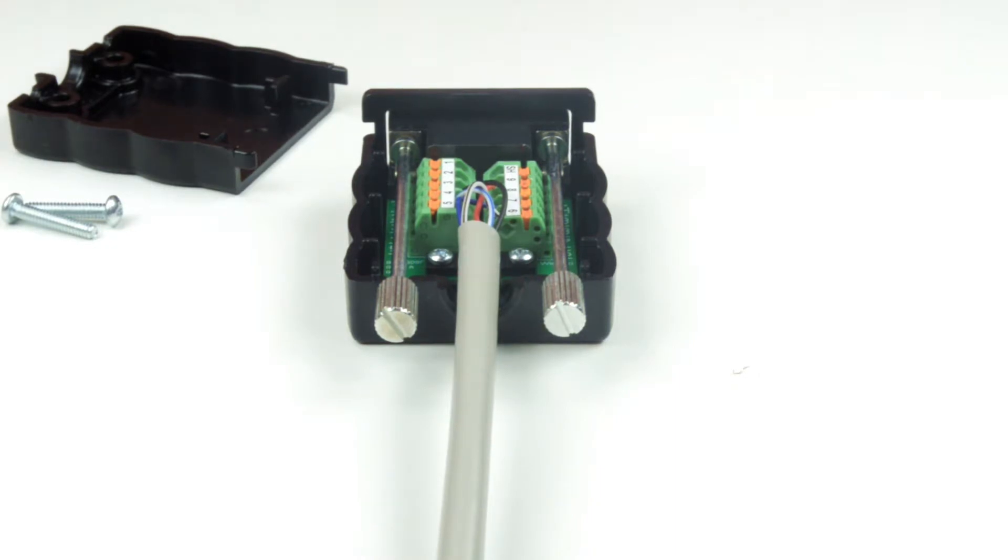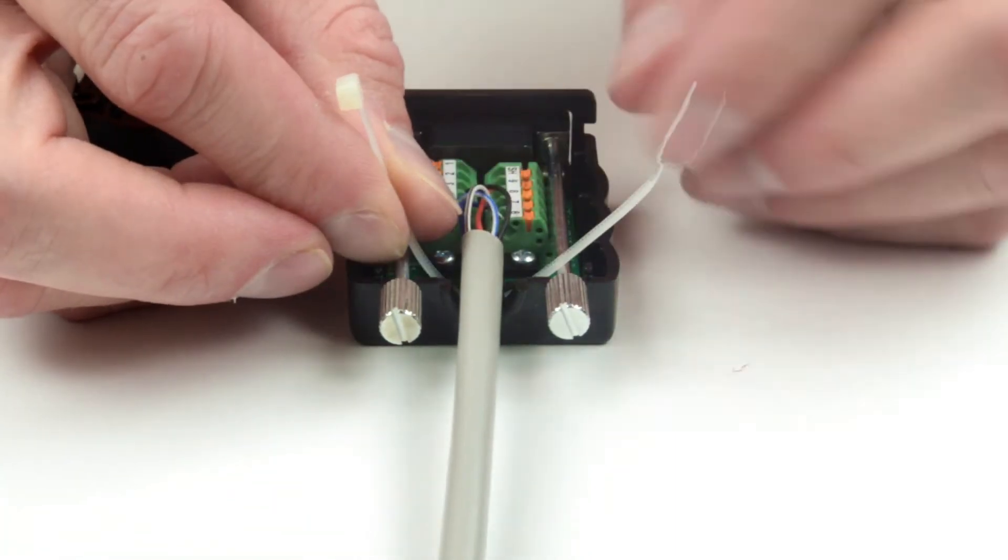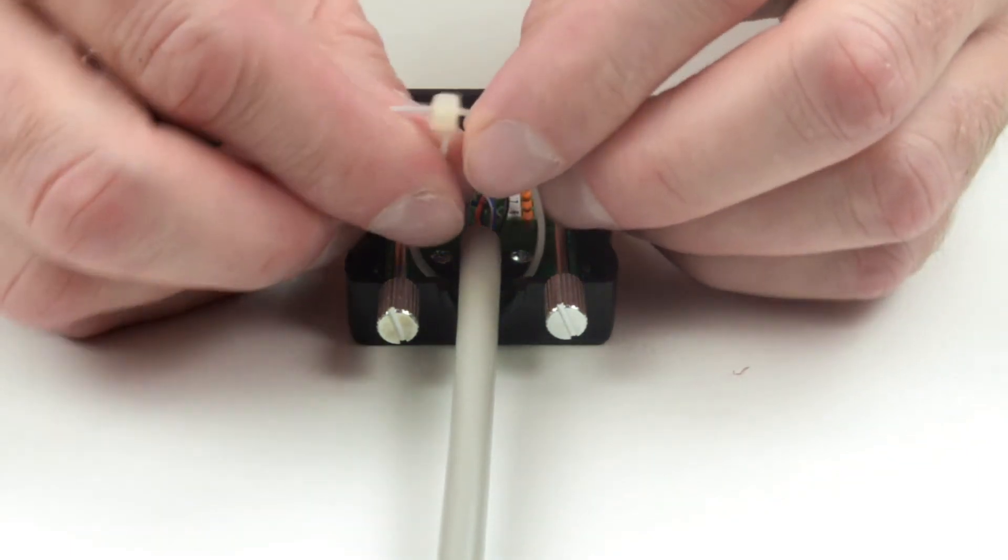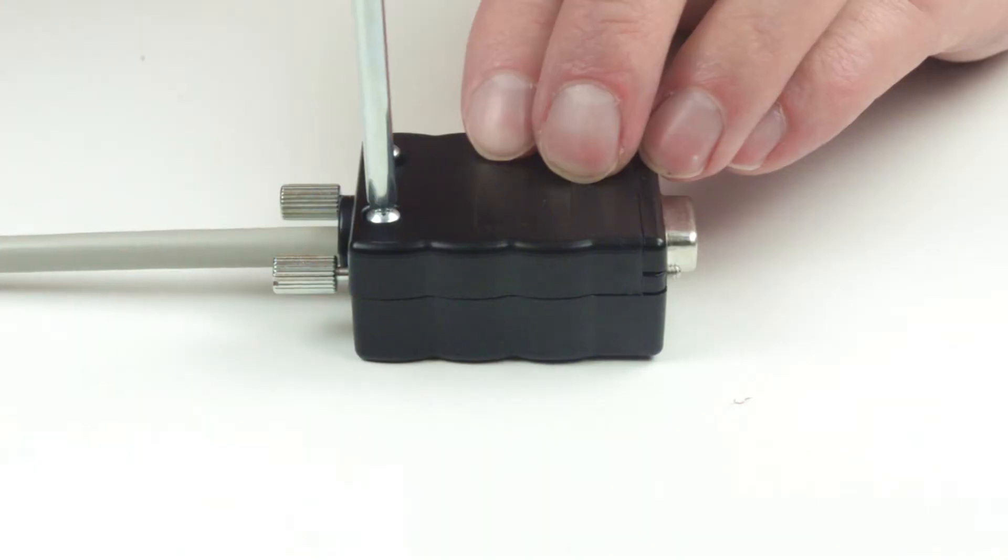Use the included zip tie to provide strain relief for the wires by guiding it through the slot on the lower shell and tightening it around the wires. Snap the cover into place and secure it with the included screws.